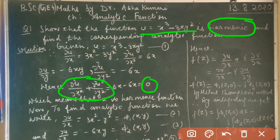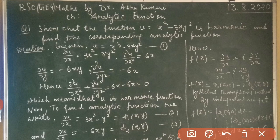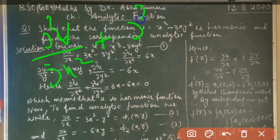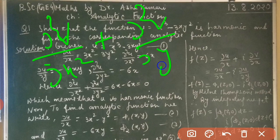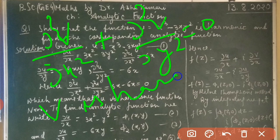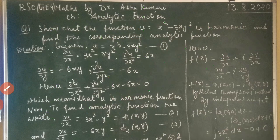If this condition holds we say the function u is harmonic. Similarly, if we have a function v, we show that ∂²v/∂x² + ∂²v/∂y² = 0 to say that v is harmonic. Whatever function is given, we prove the condition accordingly. So let us start with our given function: u = x³ - 3xy², which we label as equation (1).